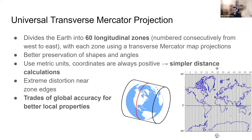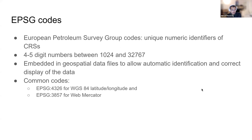I was confused seeing the zones displayed like Mercator, but the cylinder analogy makes the idea clear. Instead of remembering all projection names — where miscommunication can occur — there are EPSG codes: European Petroleum Survey Group codes, which serve as unique numeric identifiers for all coordinate reference systems. The coordinate systems are represented by four- to five-digit numbers between 1024 and 502767.